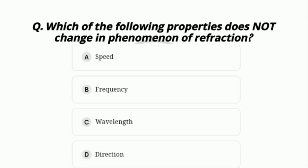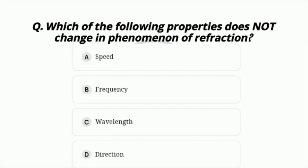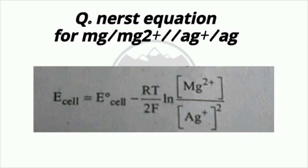Question 5: Which of the following properties does not change in reflection? Option A: speed. Option B: frequency. Option C: wavelength. Option D: direction. The answer is option C — wavelength, and option B — frequency do not change in reflection.